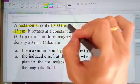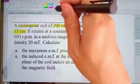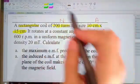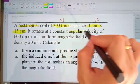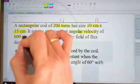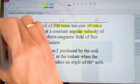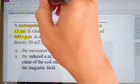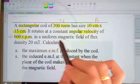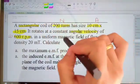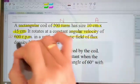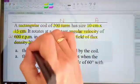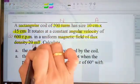Okay, with 200 turns. So we already have n. We have area. And then he says it rotates at a constant angular velocity of 600 rpm. So this is our omega. And uniform magnetic field of flux density, magnetic field flux density 20 milli Tesla. So Tesla is a unit for magnetic field. So we have our magnetic field.